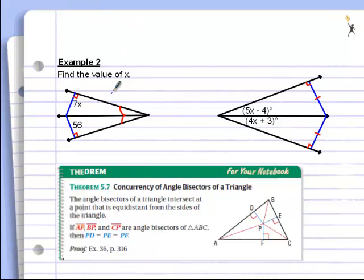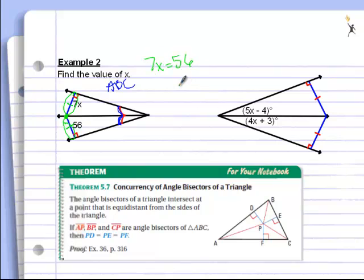Now let's look at some math behind it. If you have a problem where we have an angle — maybe it's ABC — and we see that this angle and this angle are the same, that means this point should be equidistant from both sides. That distance and that distance should be the same, so we can set them equal to each other. If I divide both sides by 7, I get x equals 8. Meaning this side equals 56 and this side equals 56.